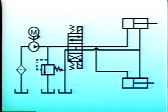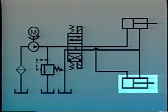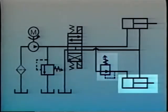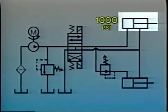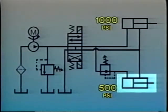A pressure reducing valve is often used to adjust the force which actuators produce. In this circuit, cylinder A clamps an object with a fluid pressure of 1,000 psi and cylinder B must clamp with half that pressure. Instead of installing a smaller cylinder at B, we can use a pressure reducing valve to bring the pressure down to 500 psi. Once pressure at cylinder B reaches 500 psi, the pressure reducing valve closes. However, pressure continues to rise at cylinder A until system pressure reaches 1,000 psi, while pressure at cylinder B remains at 500 psi.